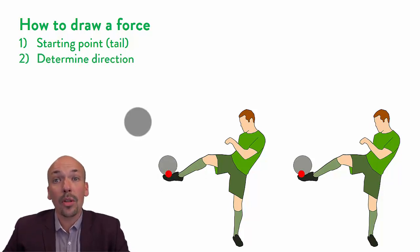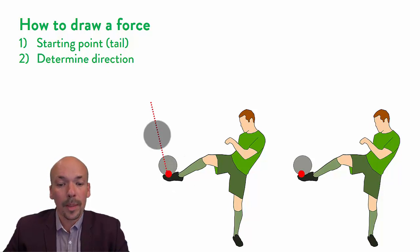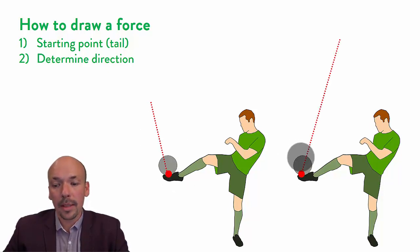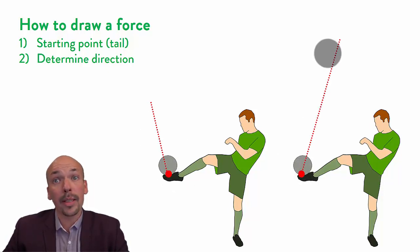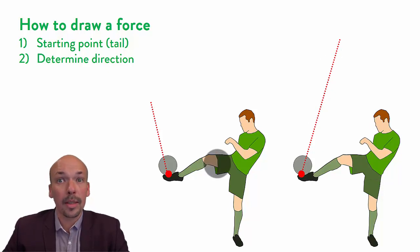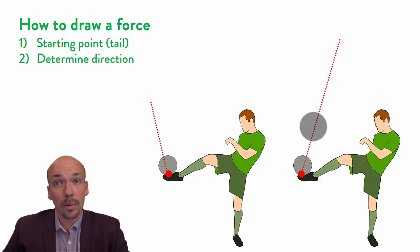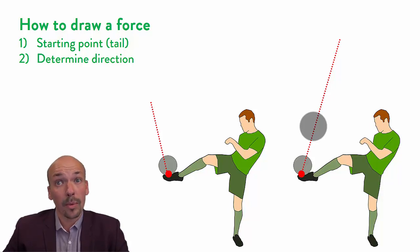Secondly, we have to determine the direction. This ball is having a force in that direction, and you can see that this direction is going the other way. So already you see that although the pictures look the same, if you look at the forces they will be different, which will also lead to a different outcome of where the ball will go.